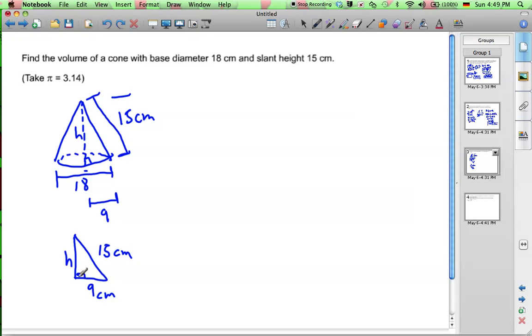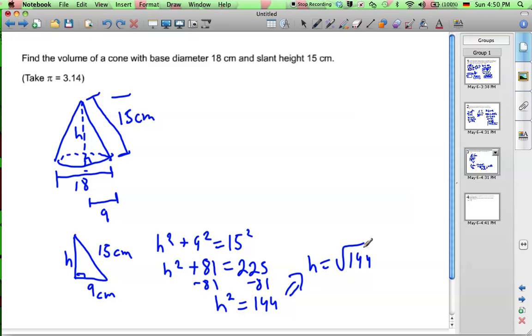So to find the height, we're going to use Pythagorean Theorem. H squared plus 9 squared equals 15 squared. So H squared plus 81 equals 225. So we subtract 81 from both sides of the equation. We get H squared equals 144. So H equals square root of 144. We get H equals 12.